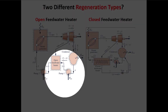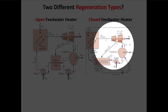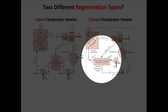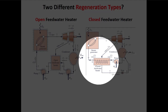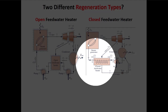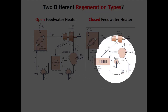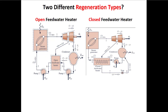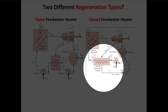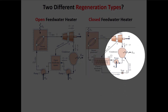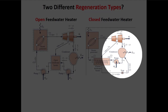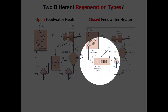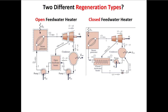An alternative is the closed feed water heater. Here, the higher-pressure, higher-enthalpy fluid runs through a shell-and-tube heat exchanger — the hot fluid runs through the shell and the cold condensed fluid runs through the tube. Heat is transferred from the hot side to the cold side, but they never physically mix. The hot mass flow gets cooled in the closed feed water heater, then runs back to the condenser where it also condenses, and the condensed fluid is preheated as it runs through the feed water heater.